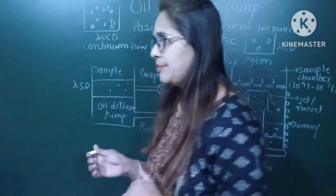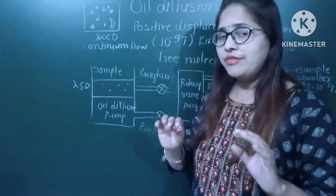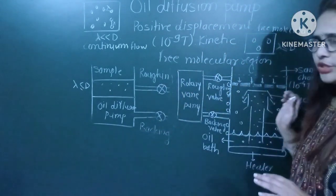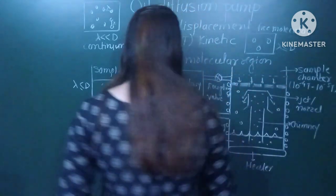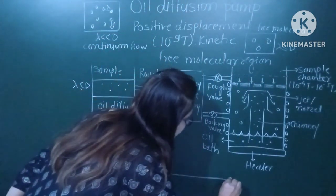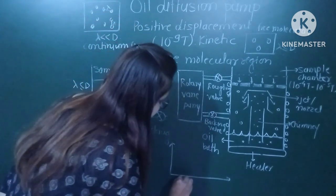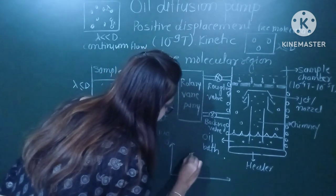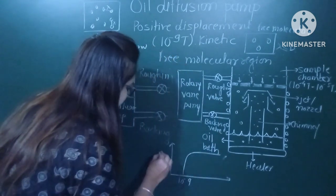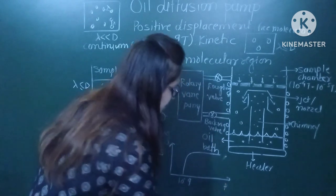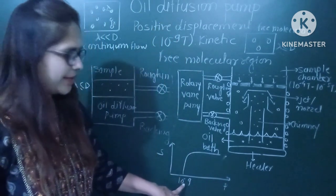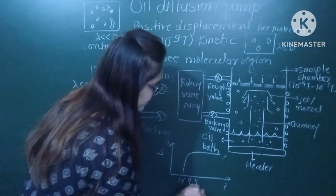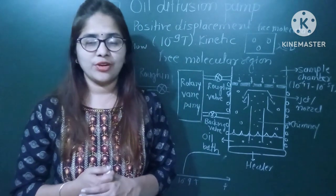In the previous lecture, we have seen that the rotary vane pump can be used to attain a vacuum of nearly 10⁻⁴ to 10⁻⁵ torr. You can also draw the pumping speed graph. This is all about the oil diffusion pump.